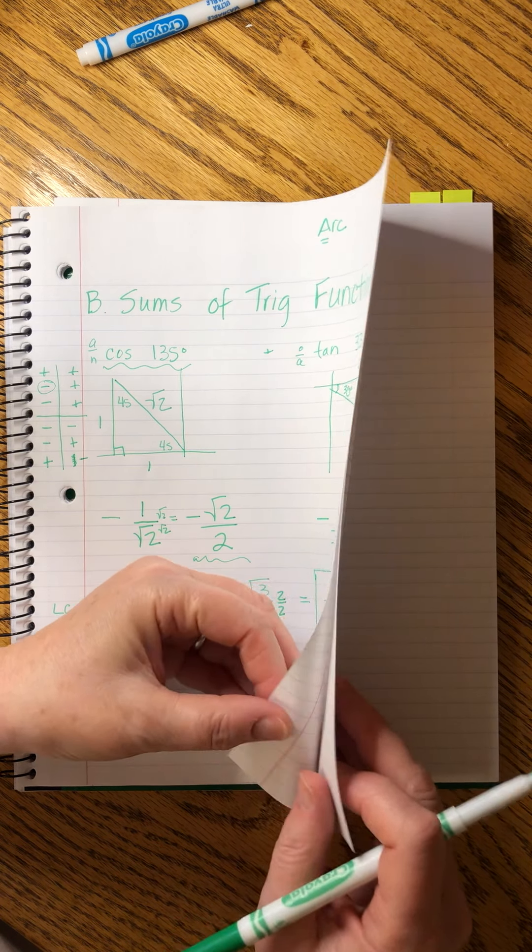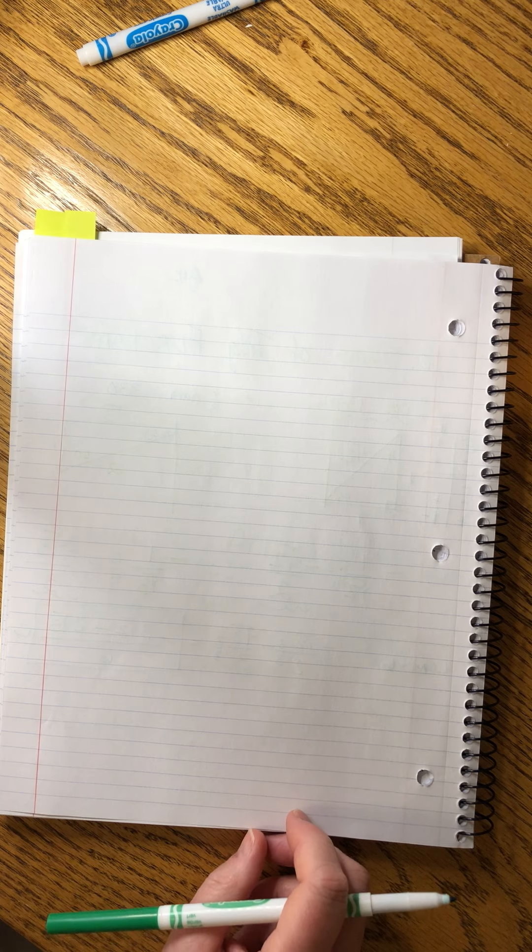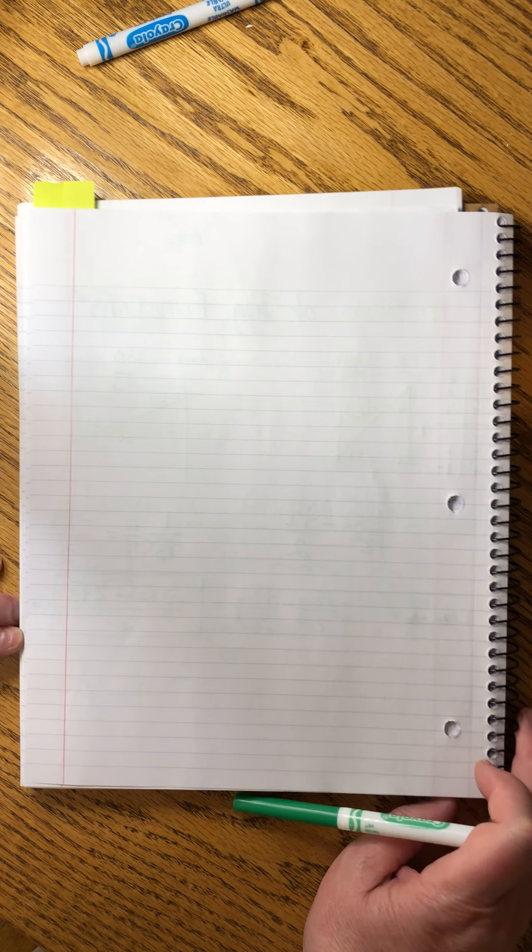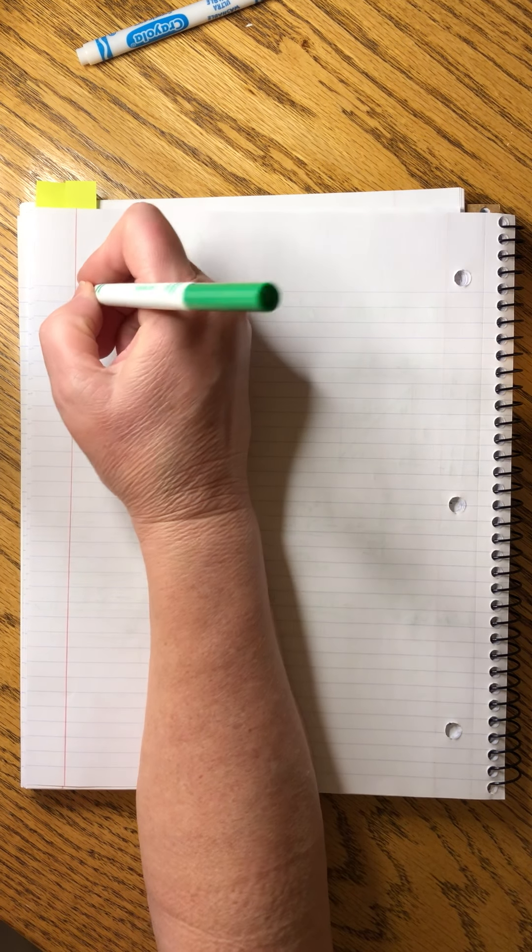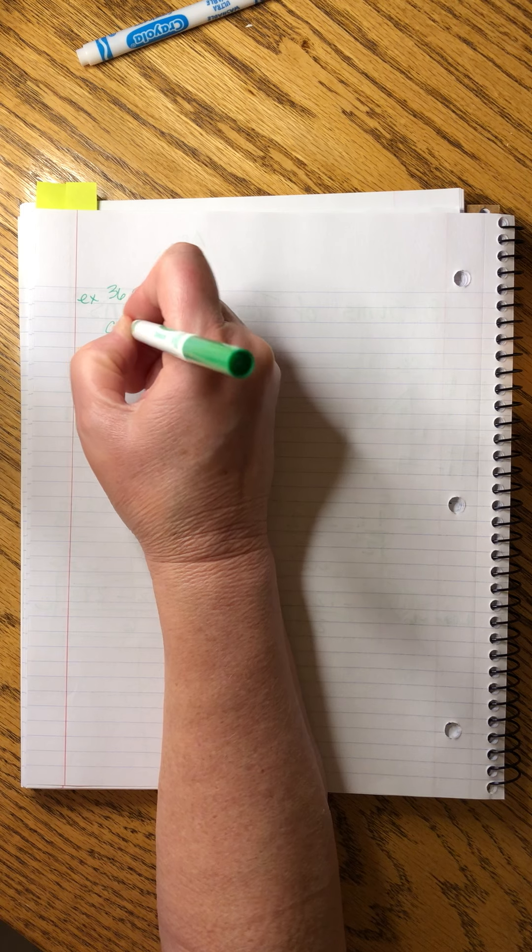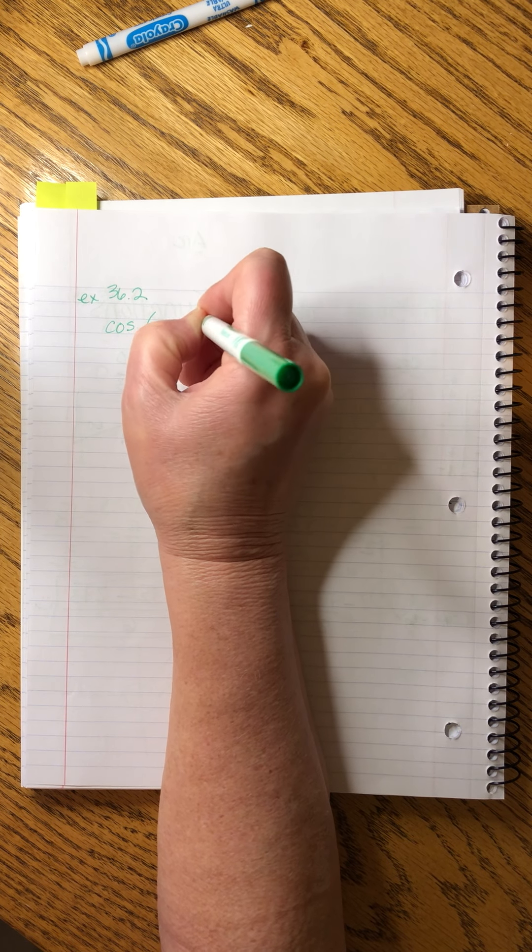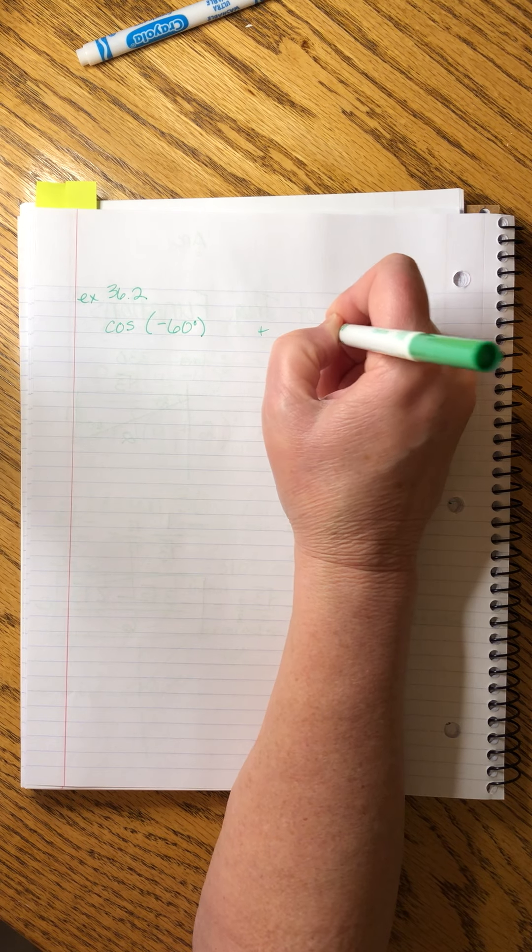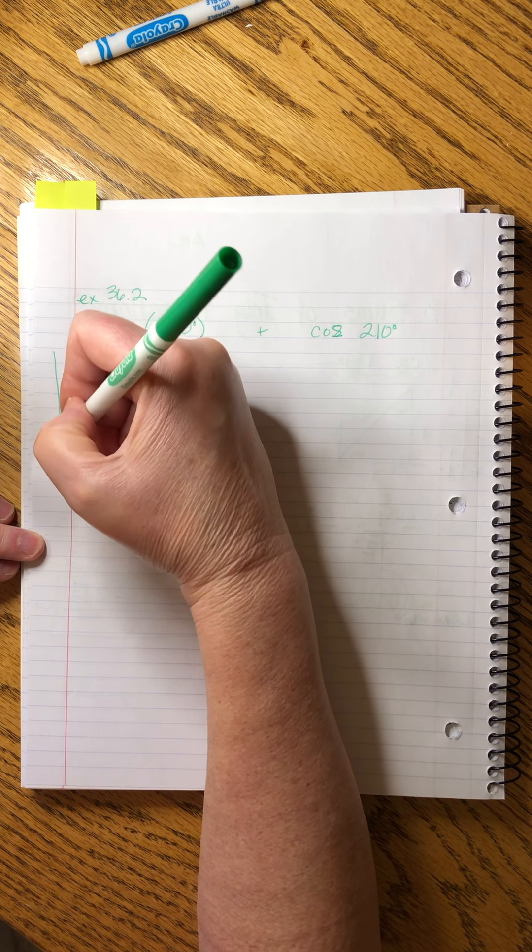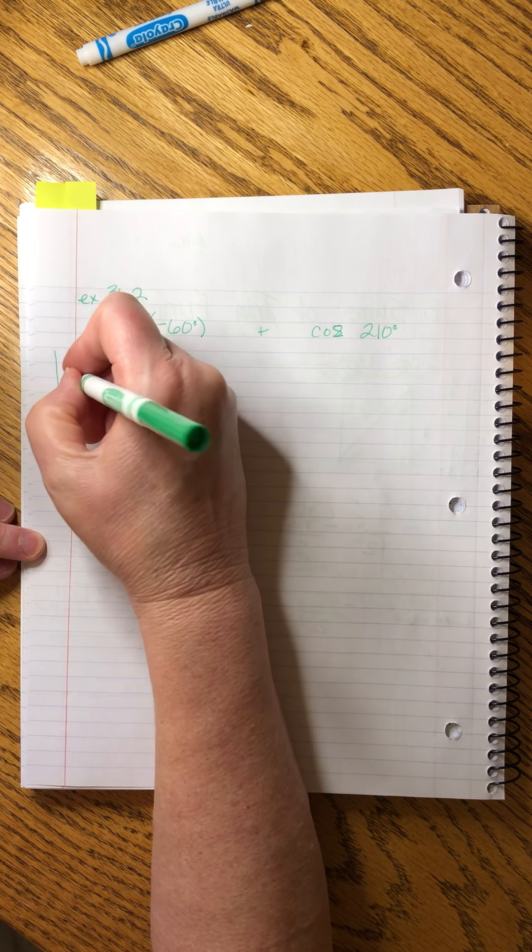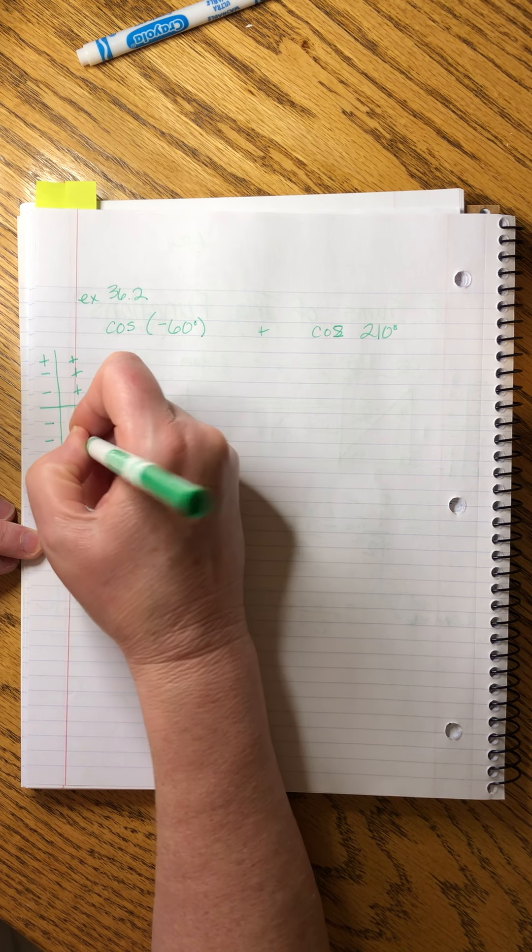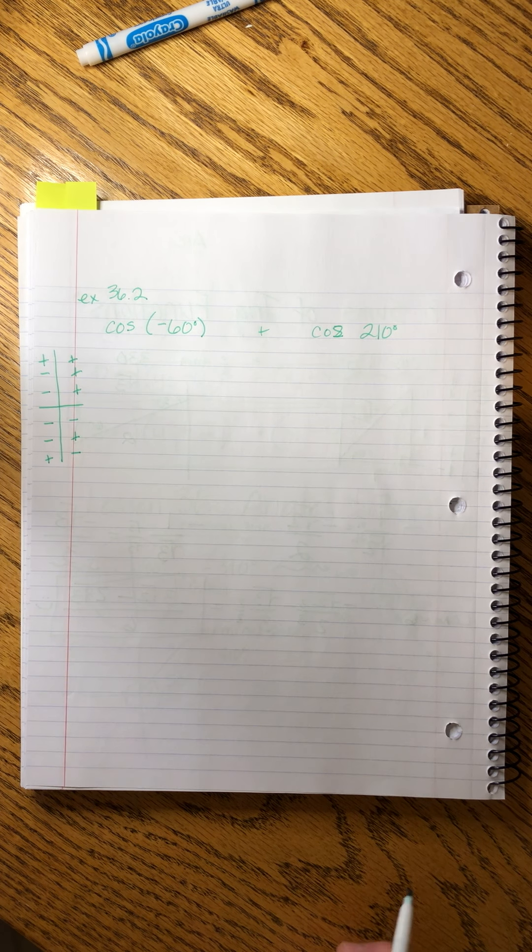Let's do the next problem. There are two more of these, counting the one that we're doing now. And then we switched to boat in the river. So here comes our second of three. Example 36.2: evaluate cosine of minus 60 degrees plus cosine of 210 degrees. I'm going to make my chart again because I know these are going to have values. Every time I write it, I'm just memorizing it a little bit better.